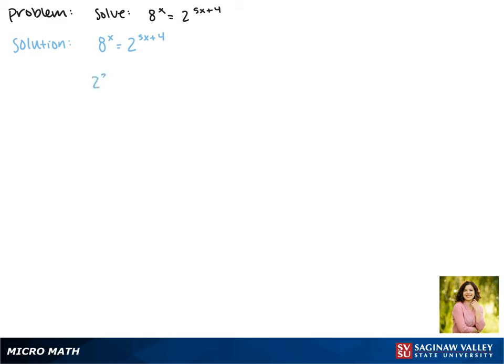8 is 2 to the 3rd power, so we can write this as 2 to the 3rd raised to the x equals 2 to the 5x plus 4.